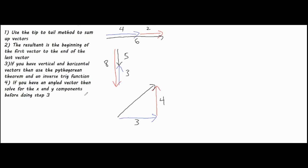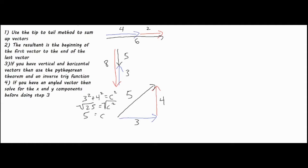We're going to use the Pythagorean theorem: a squared plus b squared equals c squared. You square both of your sides to find your hypotenuse and sum them up. Three squared is nine, four squared is sixteen, so we have 25 equals c squared. Taking the square root of both sides, c equals five. So the magnitude of our resultant vector is five.